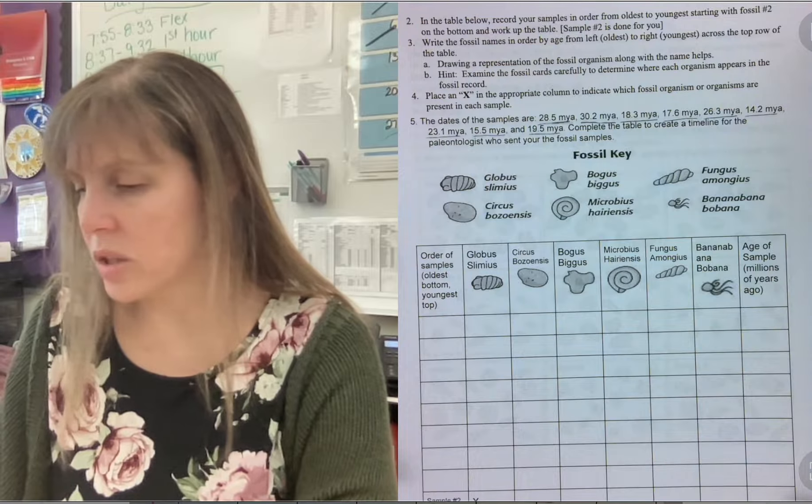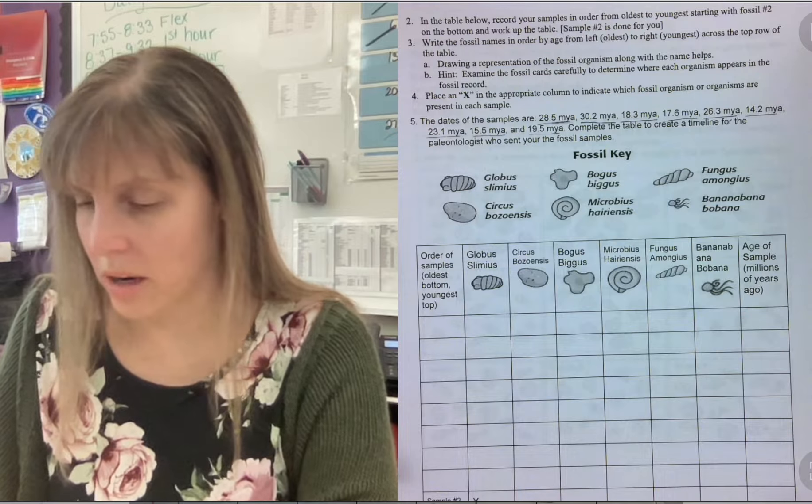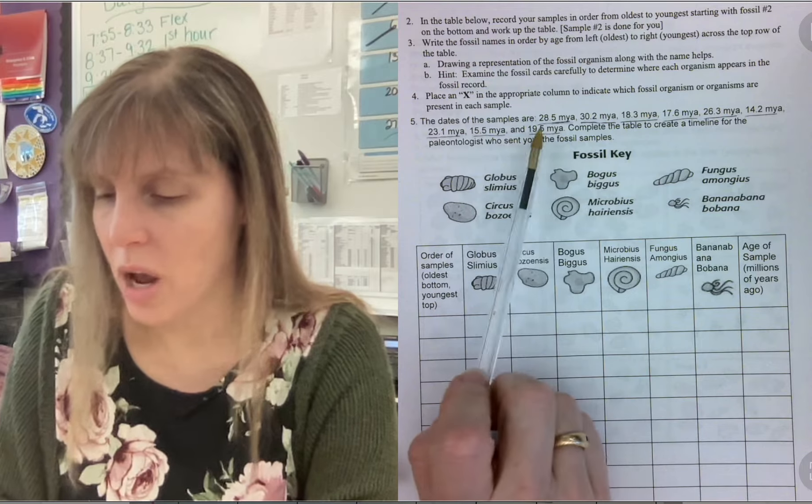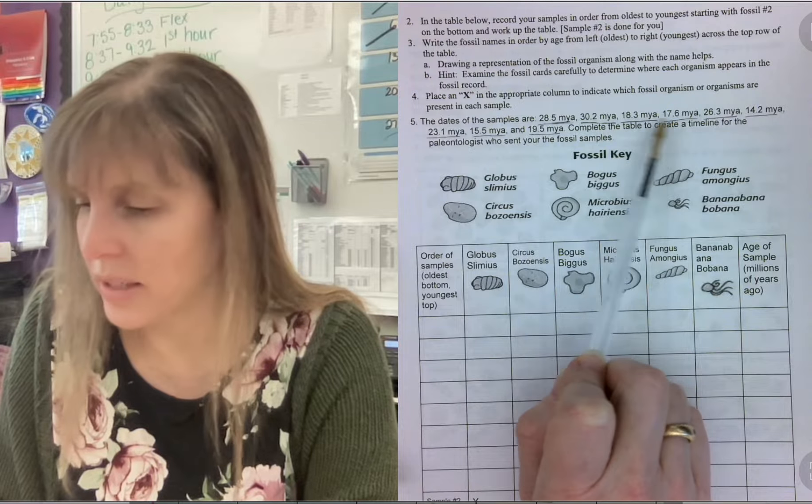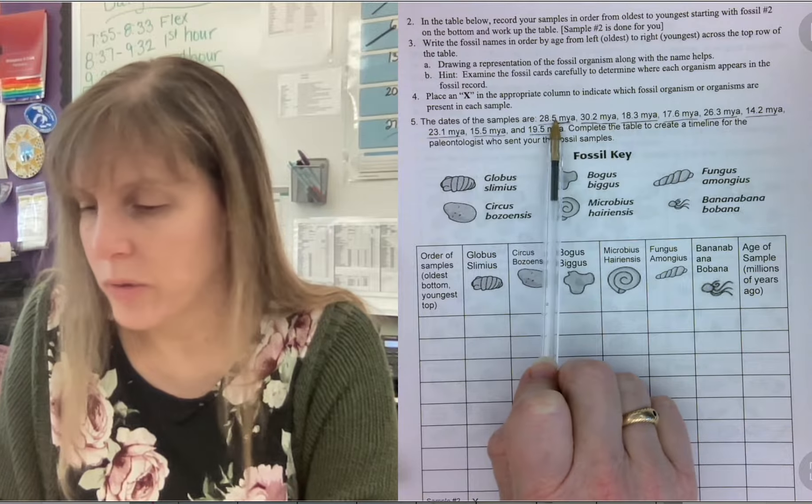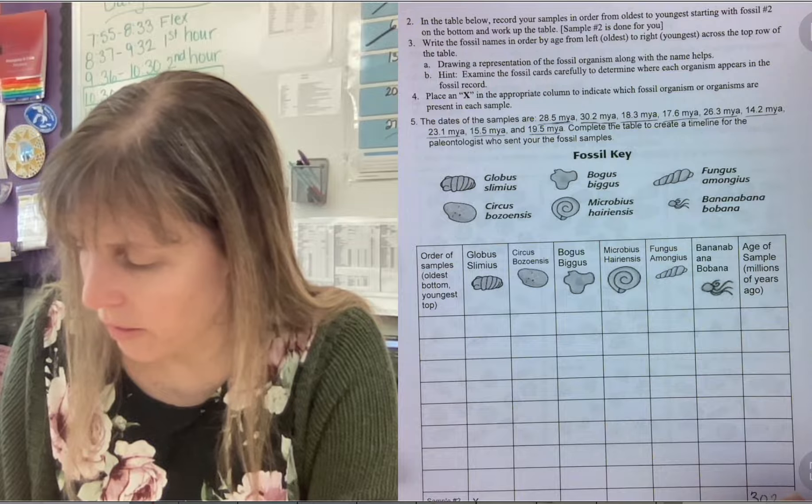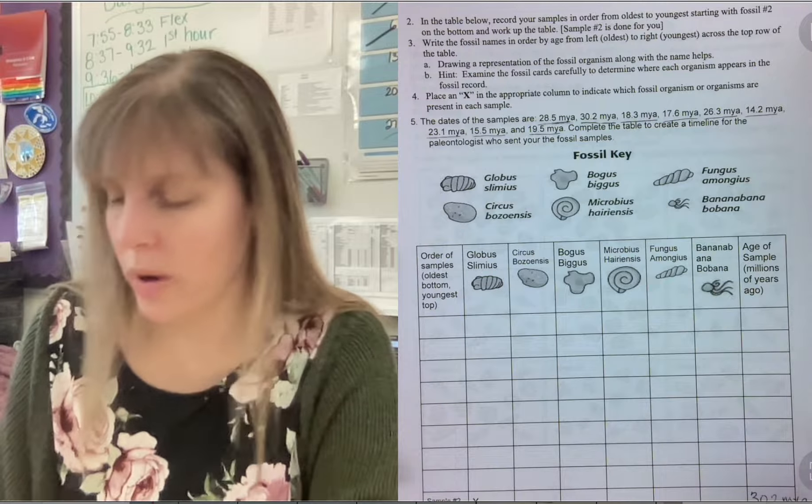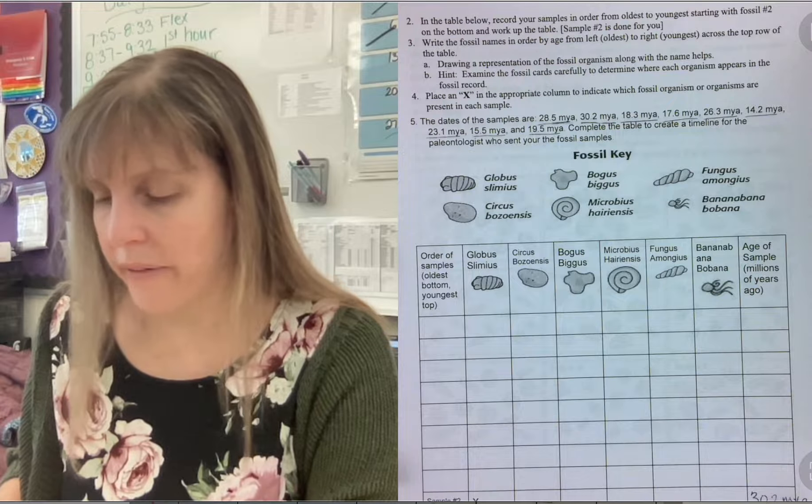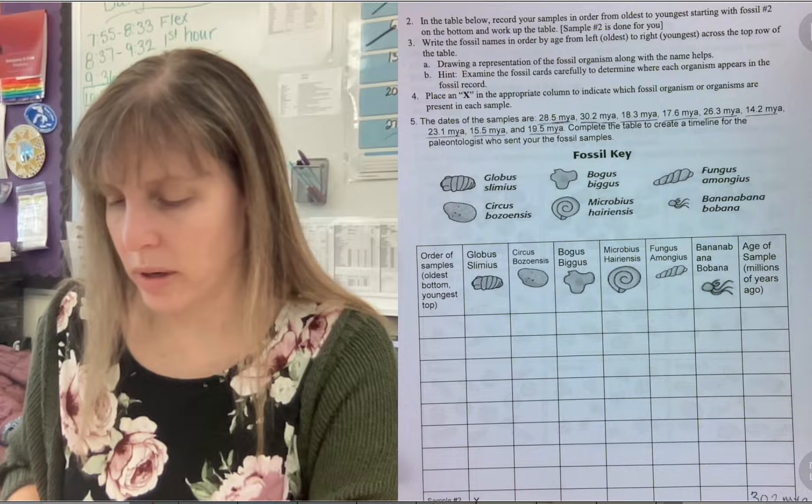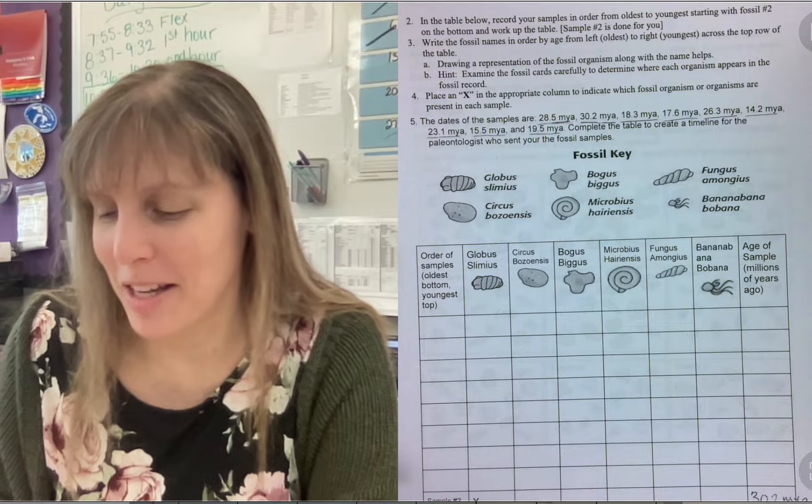So you want the longest one, the longest time ago to start down here. So if you look at the numbers, 19, 15, 23, 14, 26, 17, 18, 30, 28. The 30.2 million years ago is the longest, farthest back number that you have. And sample number two contains the globus slimyus. So I really enjoy the names of these.